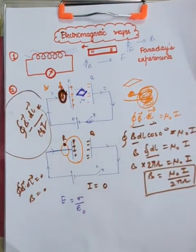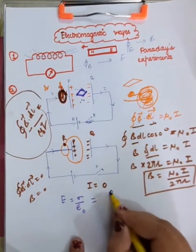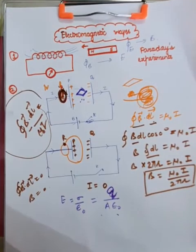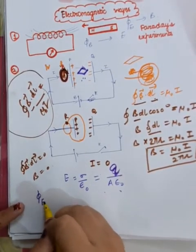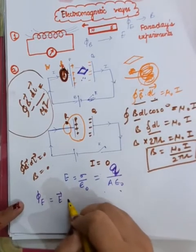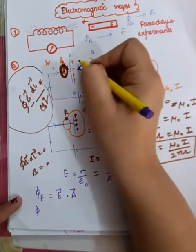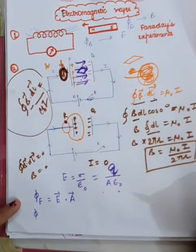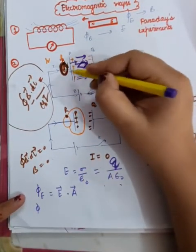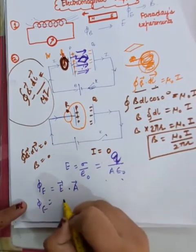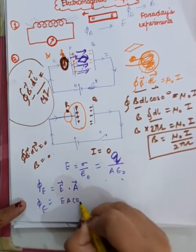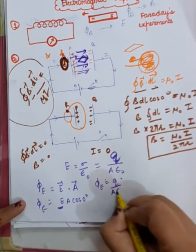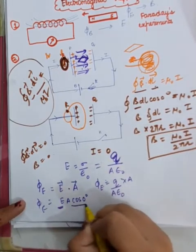We know that E = sigma / epsilon-naught between the two plates of the capacitor, where sigma is the surface charge density, equal to Q/A. So the electric flux phi_E = E·A = (Q / A·epsilon-naught) × A × cos(0°) = Q / epsilon-naught. Since charge is changing, the electric flux is also changing.